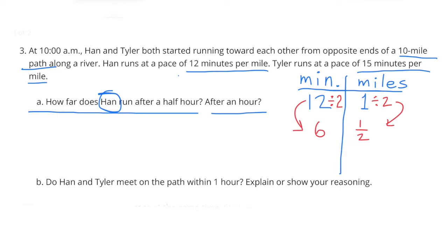Number three: at 10 a.m., Han and Tyler both started running towards each other from opposite ends of a 10-mile path along a river. Han runs at a pace of 12 minutes per mile; Tyler runs at a pace of 15 minutes per mile. Part a: how far does Han run after a half hour and after an hour? On this table I have minutes on the left and miles on the right.